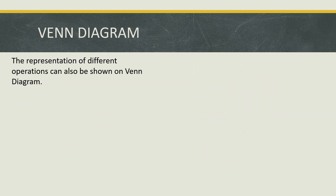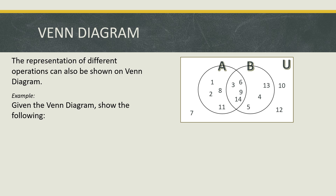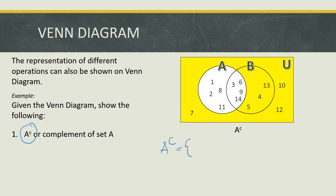The representation of different operations can also be shown on a Venn Diagram. Example — given the Venn Diagram again, show the following. Number 1: complement of set A. Note that the symbol for complement is a small superscript c. To show the complement of set A using the Venn Diagram, take note that the complement of set A contains all elements belonging to the universal set but not to set A. So we shade all elements not in set A. Therefore, the complement of set A has elements 4, 5, 7, 10, 12, and 13.